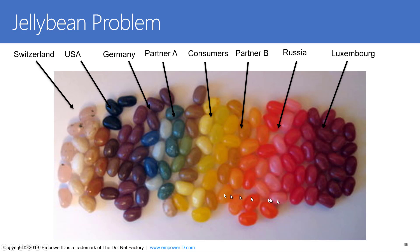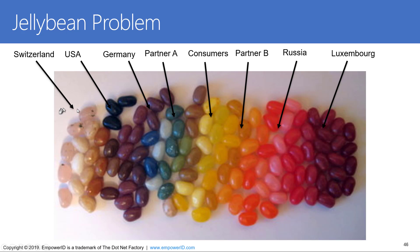In this slide we can see different colors of jellybeans. Each color of jellybean represents a different type of user — whether it's a customer, whether it's a partner, or if they're employees from different parts of the organization, different business units, different geographic regions — however you break out your company.